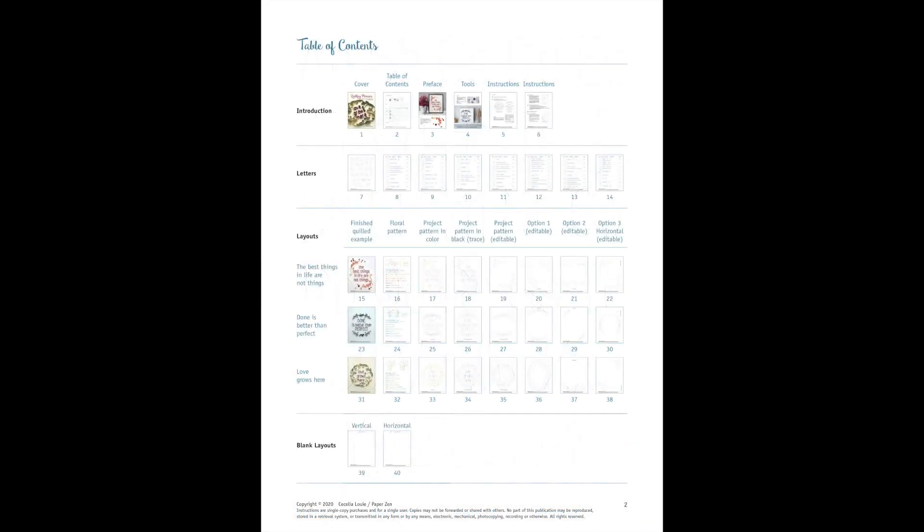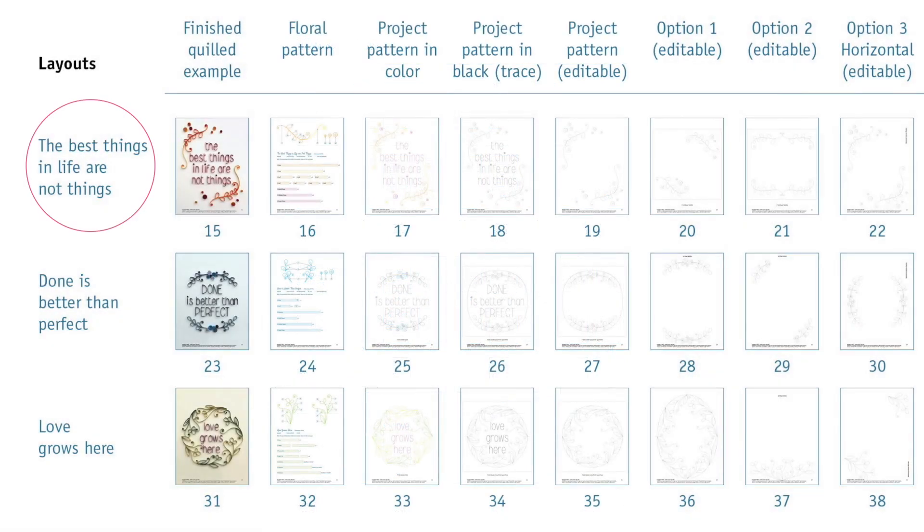For the layout section there are three floral patterns to choose from on the left hand side. The first one is called 'the best things in life are not things.' The next floral pattern is called 'done is better than perfect' and the last floral pattern is called 'love grows here.' Each one shows a finished full page example.